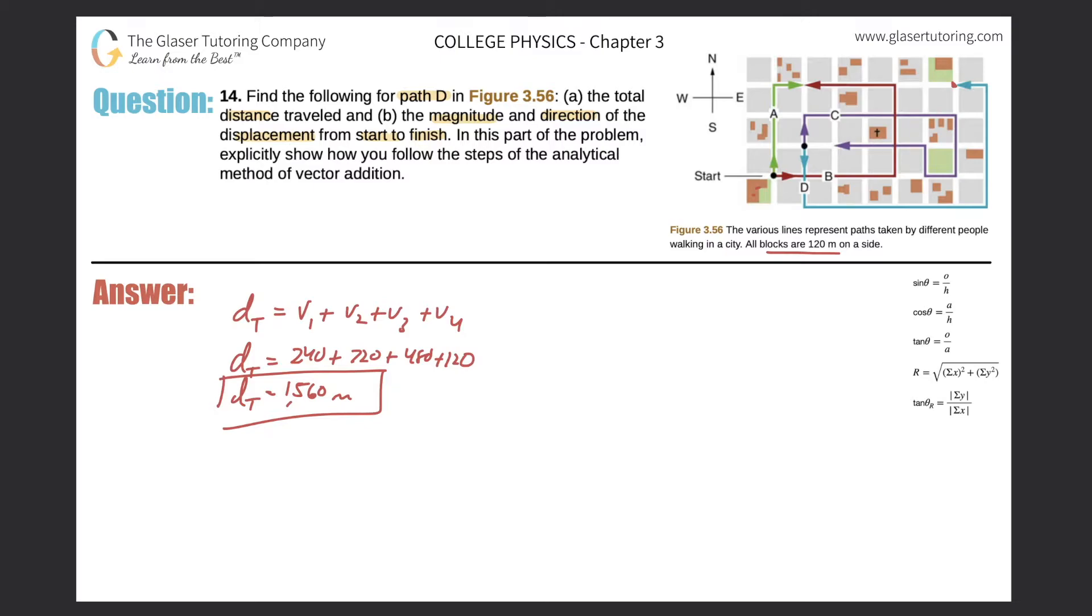So now for part B we need to find the magnitude and direction of the displacement. So remember that the displacement is simply the difference between the start and the finish. So this point represents the start and this point represents the end. So the displacement would simply be the straight line distance between the start and the end. That line would represent the displacement.